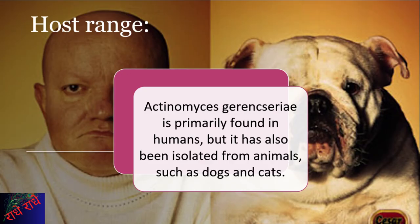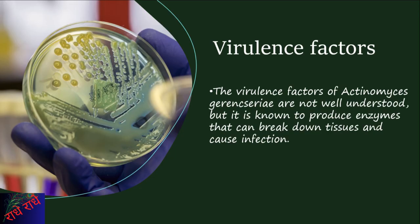Actinomyces garangerii is a species of bacteria that primarily exists in humans, as well as other animals like dogs and cats. It is known to cause infection in humans and animals, linked to a variety of ailments from skin infections to more serious illnesses. Research has demonstrated that it produces enzymes that can break down tissues, resulting in tissue damage, inflammation, and infection. More work is needed to clarify the exact mechanisms which allow it to cause harmful infections.